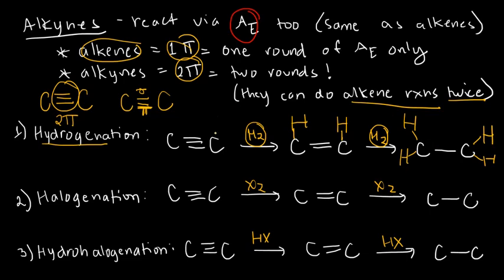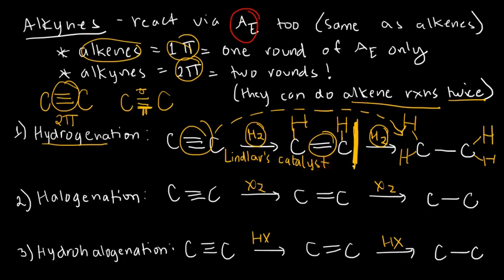The common thing that happens is an alkyne goes straight to an alkane. We usually don't stop at just a double bond. What if we want to end with a double bond? The answer is yes, if you use a special catalyst called Lindlar's catalyst. This is similar to metal catalysts we used before in hydrogenation, but it's weaker, so you only stop at a double bond and don't go straight to a single bond.